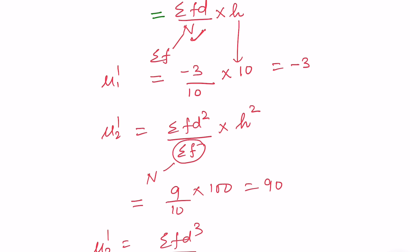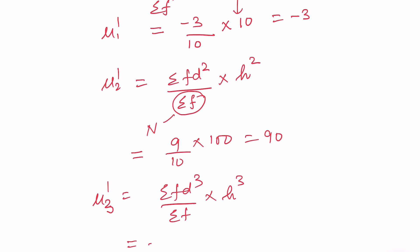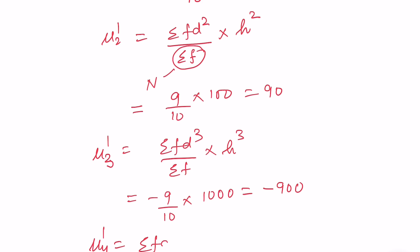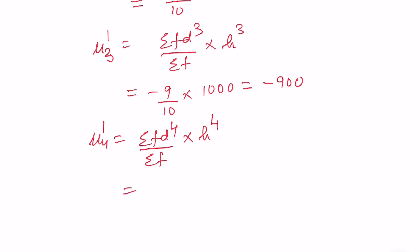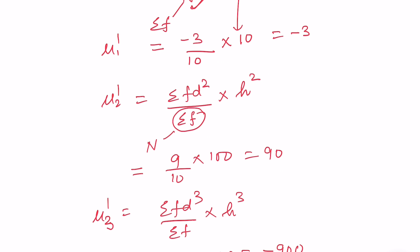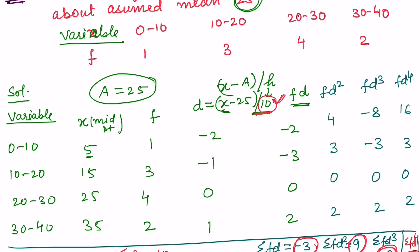μ₃' = [σ(fd³)/N] × h³ = (−9/10) × 1000 = −900. μ₄' = [σ(fd⁴)/N] × h⁴ = (21/10) × 10000 = 21000. So the four moments about the arbitrary point a=25 are: μ₁'=−3, μ₂'=90, μ₃'=−900, μ₄'=21000. If you have any queries, please ask in the chat.